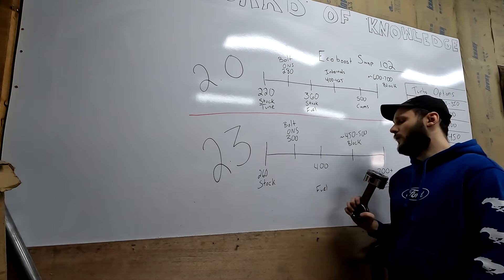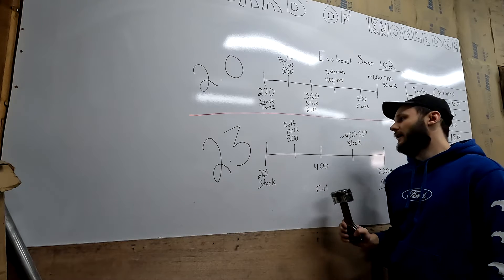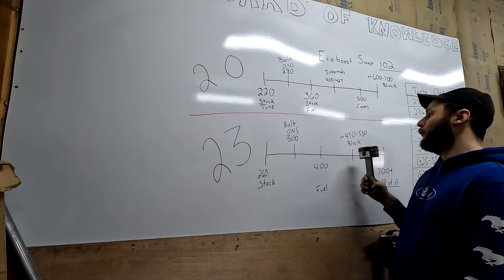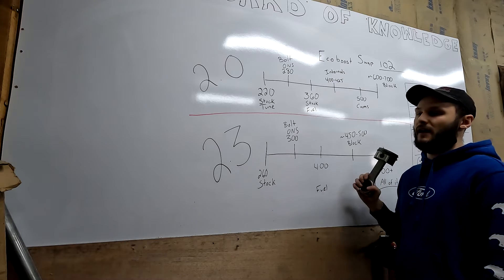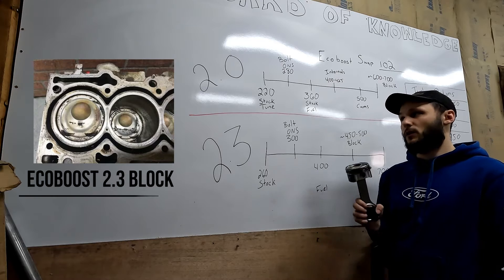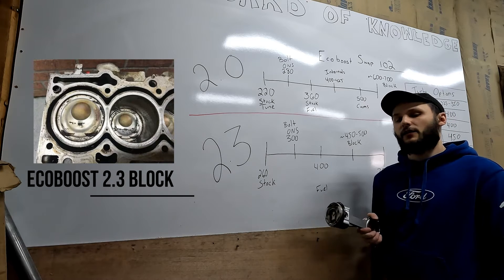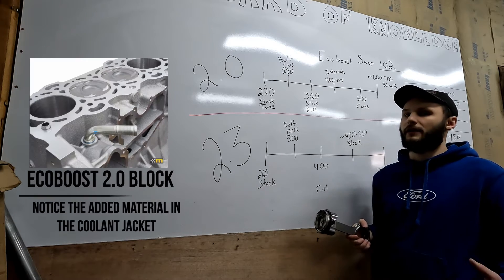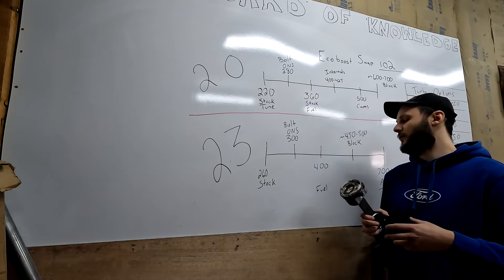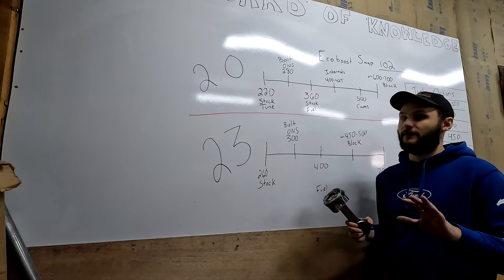Around 400 we will hit our stock fueling limit and also start getting close to the limit of the block. At the 450 to 500 mark, the 2.3 blocks are open deck, whereas the 2.0 blocks are closed deck, so they hit their power limit much earlier. They have floating sleeves, basically, which is not great for making big power. It's great for cooling, not great for big power.